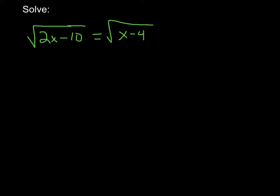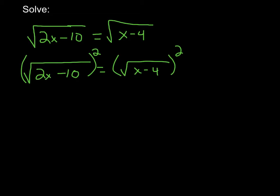So what I can do is square both sides. I've got the square root of 2x minus 10 equal to the square root of x minus 4. I'm going to square both sides. By squaring it, that gets rid of the square root sign, so those two will cancel each other. Same thing on this side, I'll get rid of that.